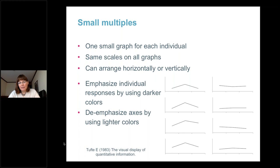So every graph in your small multiples needs to have exactly the same scale. You can arrange your small multiples horizontally or vertically, which we'll discuss shortly. One strategy is to emphasize individual responses using darker colors and de-emphasize the axes or frame using lighter colors, which helps the lines for individual responses jump out compared to the data frame.